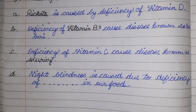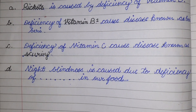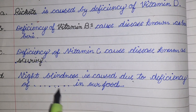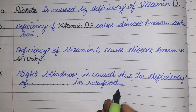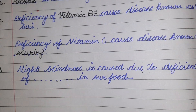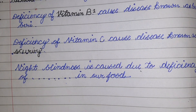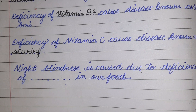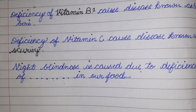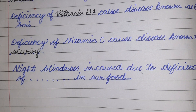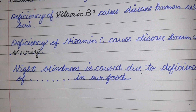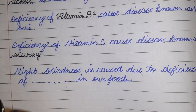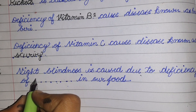This question is: night blindness is caused due to deficiency of dash in our food. This question asks which vitamin deficiency causes people to be unable to see at night. The answer is Vitamin A.